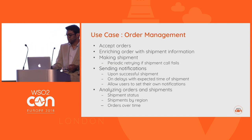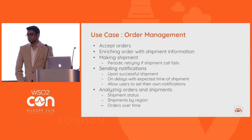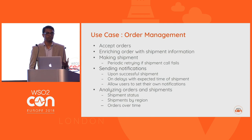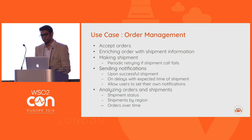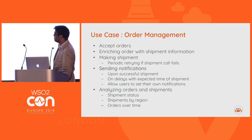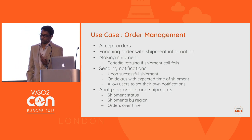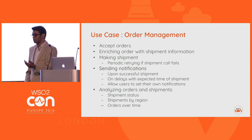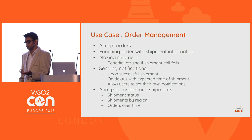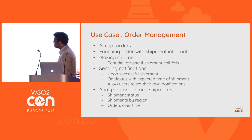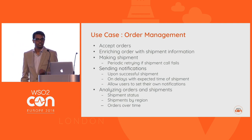In this particular use case there are lots of sub-parts. You have to first accept orders. You have to enrich the order with shipment information — like when an order comes from a particular user, you have to find out where you want to send that information. Then you have to actually make the shipment. Sometimes you will go out of stock, so you have to retry that shipment after some time because you currently can't do it. Then you have to send notifications — upon successful shipment, you have to inform your customer that the shipment is successful.